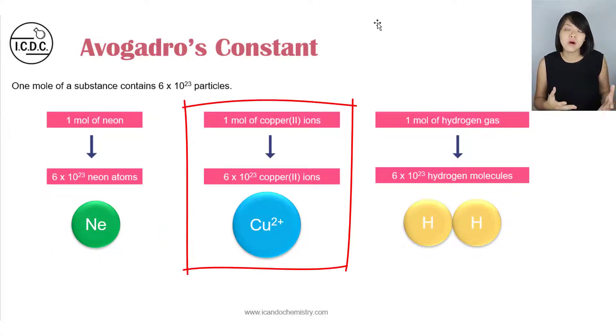What about 1 mole of copper 2 ions, which is Cu2+? Now copper 2 ions, this is very straightforward. We are dealing with ions in this case.